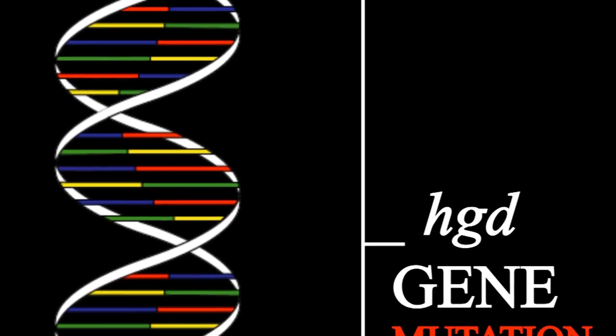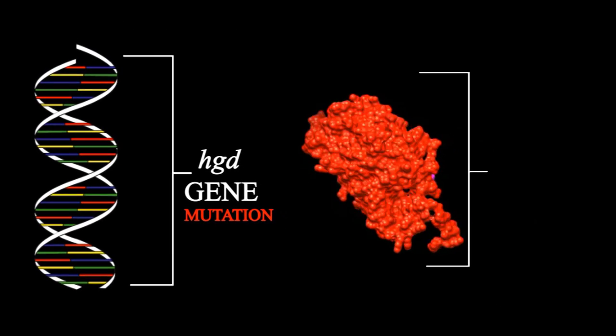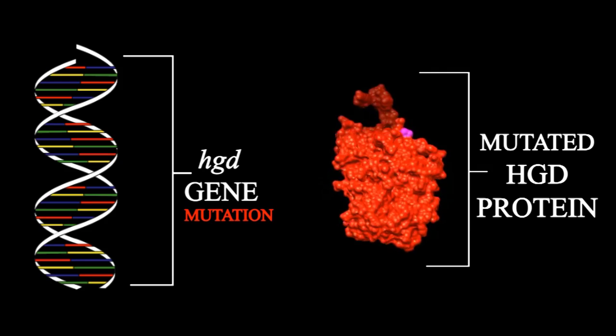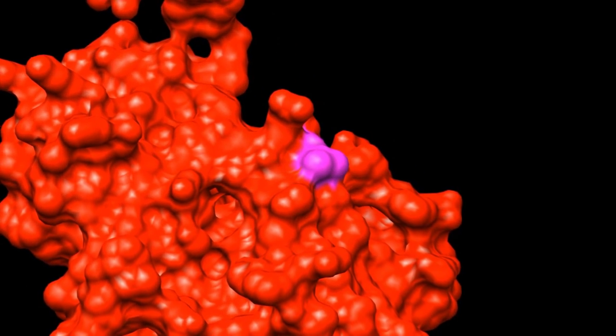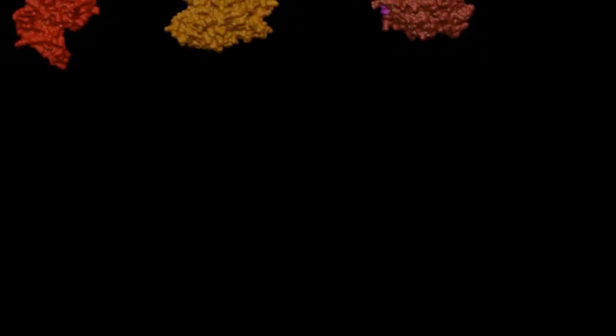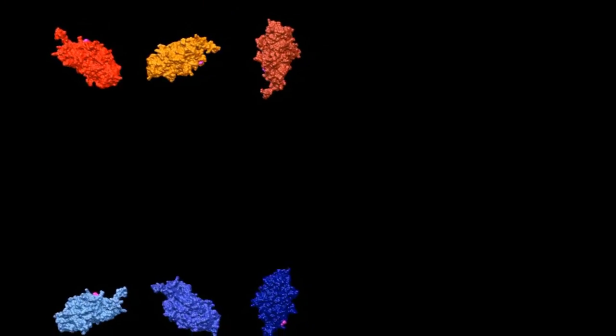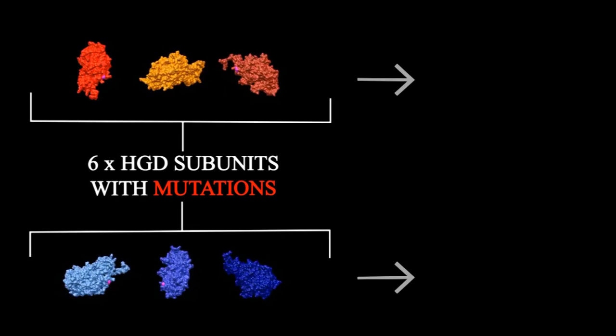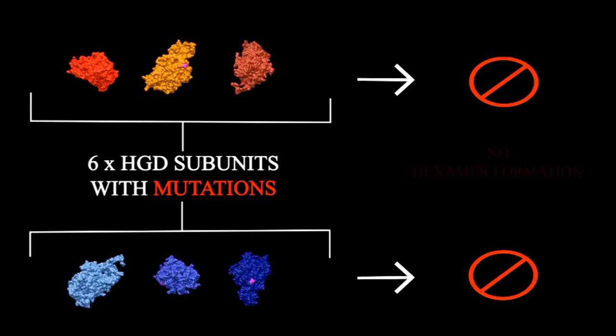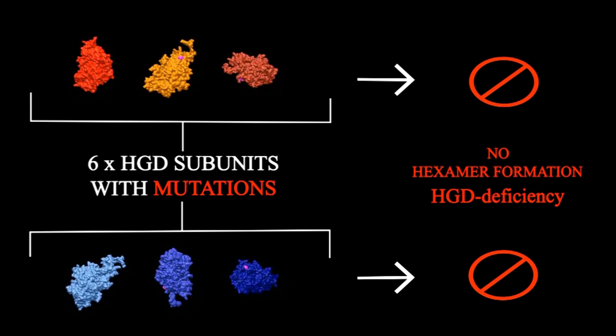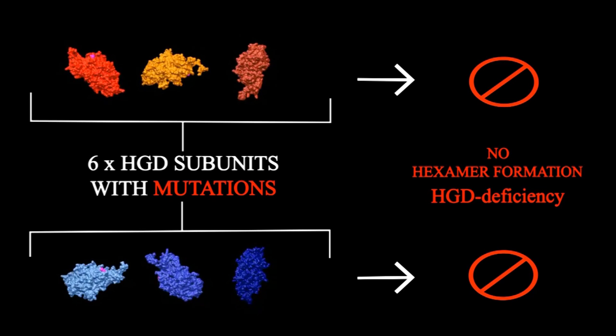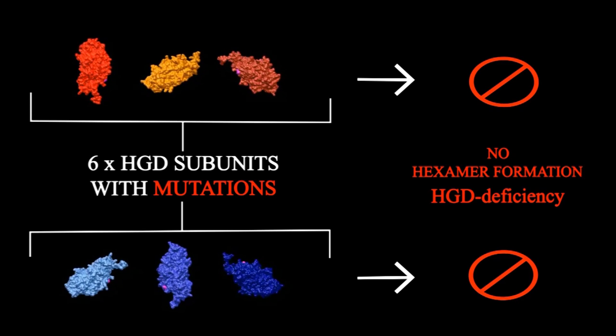A mutation of the HGD gene causes alterations of the HGD protein structure. There are over 100 known HGD mutations. Here, we show a mutation that interferes with the trimer formation so that the hexamer structure cannot be formed. Thus, the HGD enzyme is inactive. This is called HGD deficiency.